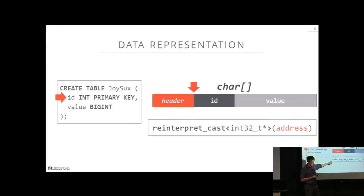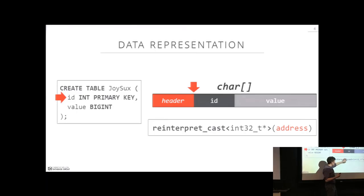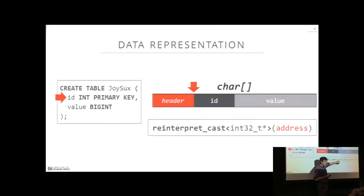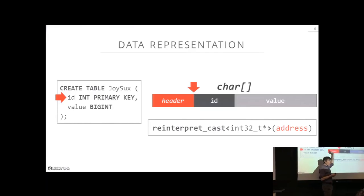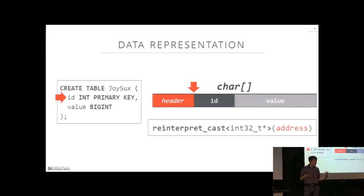Reinterpret_cast is a compiler directive — it doesn't generate any actual instructions. It allows the code to take whatever is at a given address and treat it as whatever type you're casting to. The key thing is we don't have to copy any information; we just allow the code to access that address as a 32-bit integer, for example. Since C++ is strongly typed, this is how we take an arbitrary byte string and apply type structure to a particular address without any additional CPU instructions.